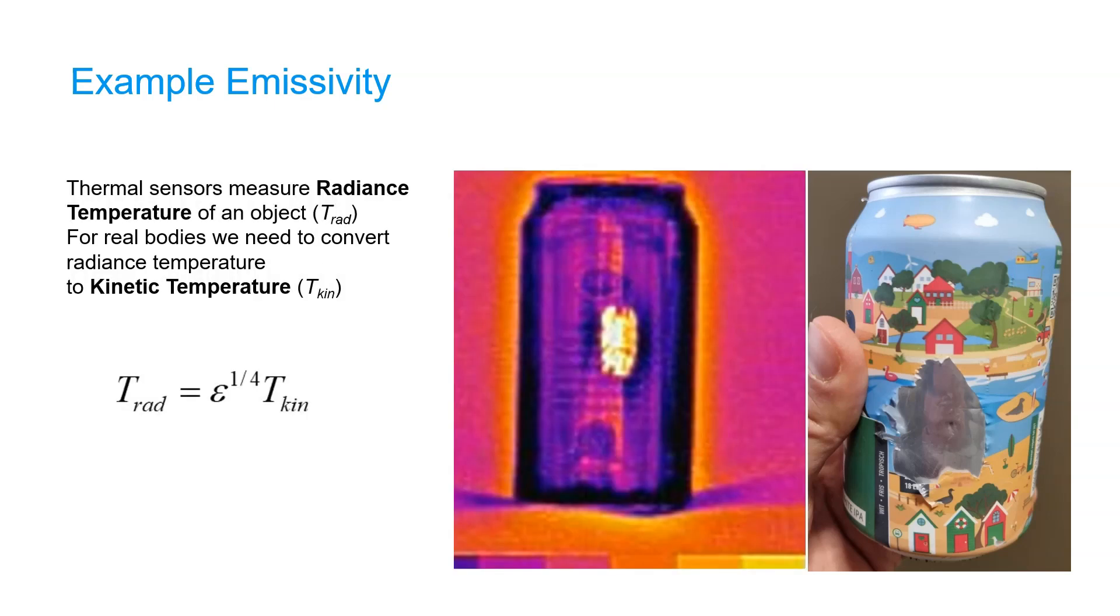Measuring temperatures with a thermal sensor is different than using a thermometer. With a thermometer, we measure kinetic temperature, which is the contact temperature that we measure as a result of the moving molecules. The radiance temperature measured by thermal sensors is different and need to be corrected for the emissivity of the object.